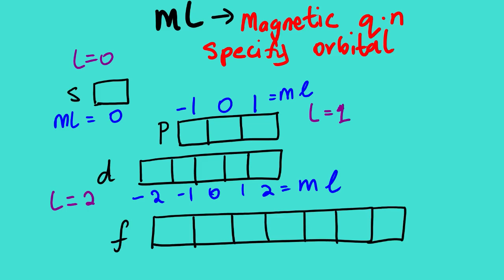For D orbital, L equals 2, so ML ranges from negative 2, negative 1, 0, 1, to 2. For F orbital, L equals 3, so ML ranges from negative 3, negative 2, negative 1, 0, 1, 2, to 3. That is what you need to know about the magnetic quantum number.